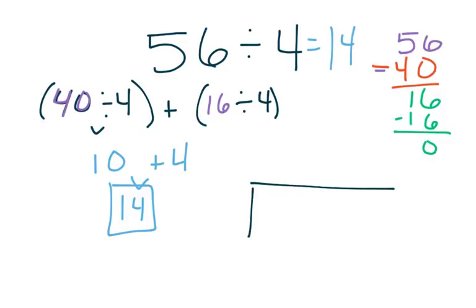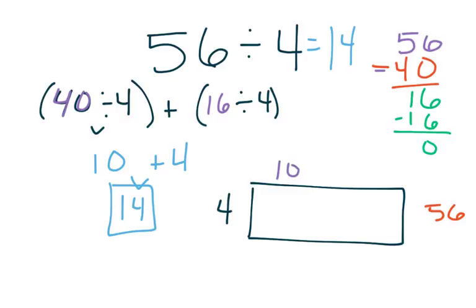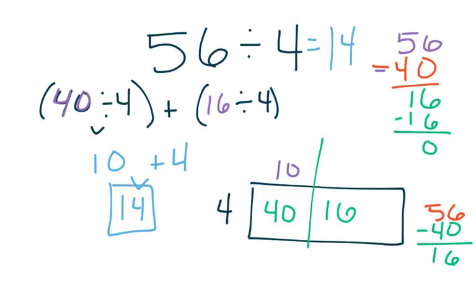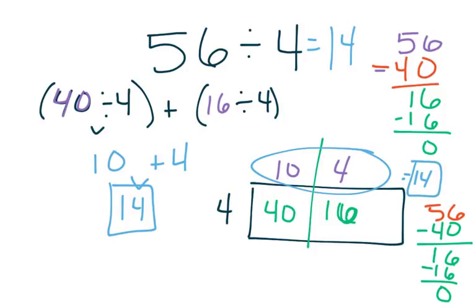Let's take a look at the area model. I draw my rectangle, place my 4 on one side, place my 56 off to the side so I can subtract, and maybe I'd start with 4 times 10. 4 times 10 gives me 40, so I'd subtract 40 from my whole and be left with 16. Then 4 times 4 gives me 16, and I'd subtract 16 from my whole and be left with 0. I add my 10 and my 4 together, and that gives me 14, just like I got with my distributive property. Either way, my quotient is 14.